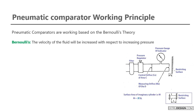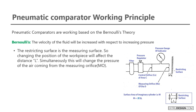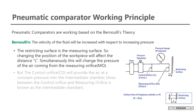Check the schematic diagram of the pneumatic comparator. The restricting surface is the measuring surface, so changing the position of the workpiece will affect the distance L, thereby changing the pressure of the air coming from the measuring orifice. The control orifice provides air at a constant pressure into the intermediate chamber. The intermediate chamber is the area between the control orifice and the measuring orifice.